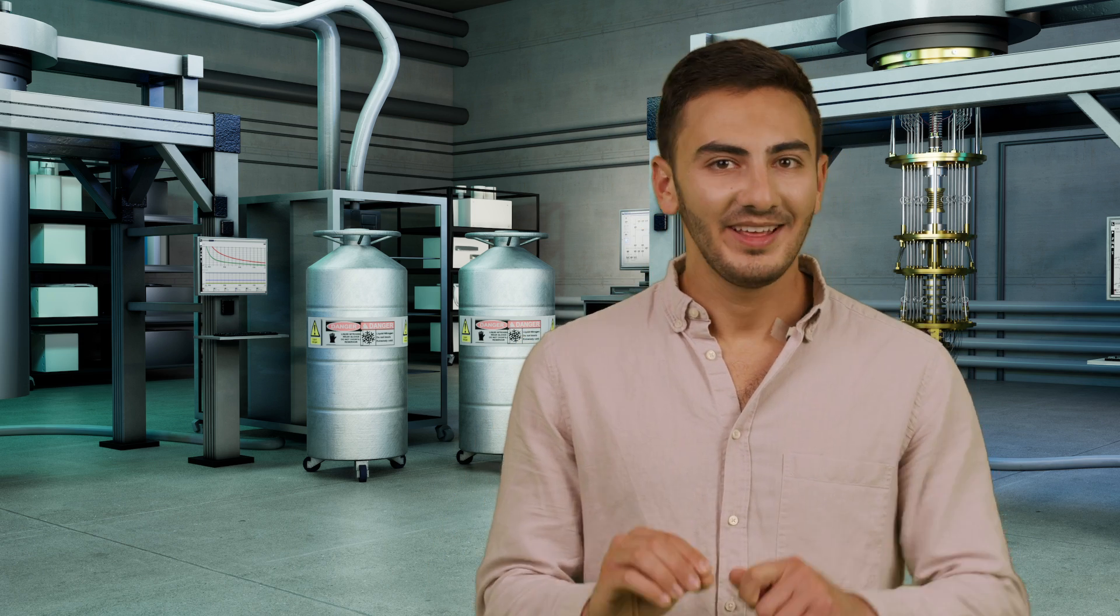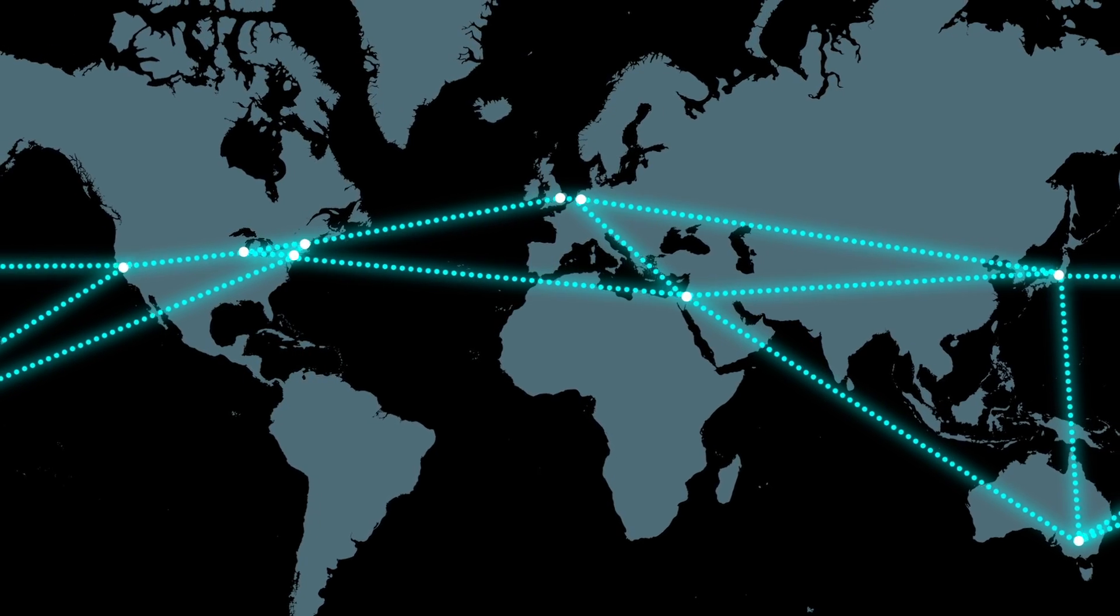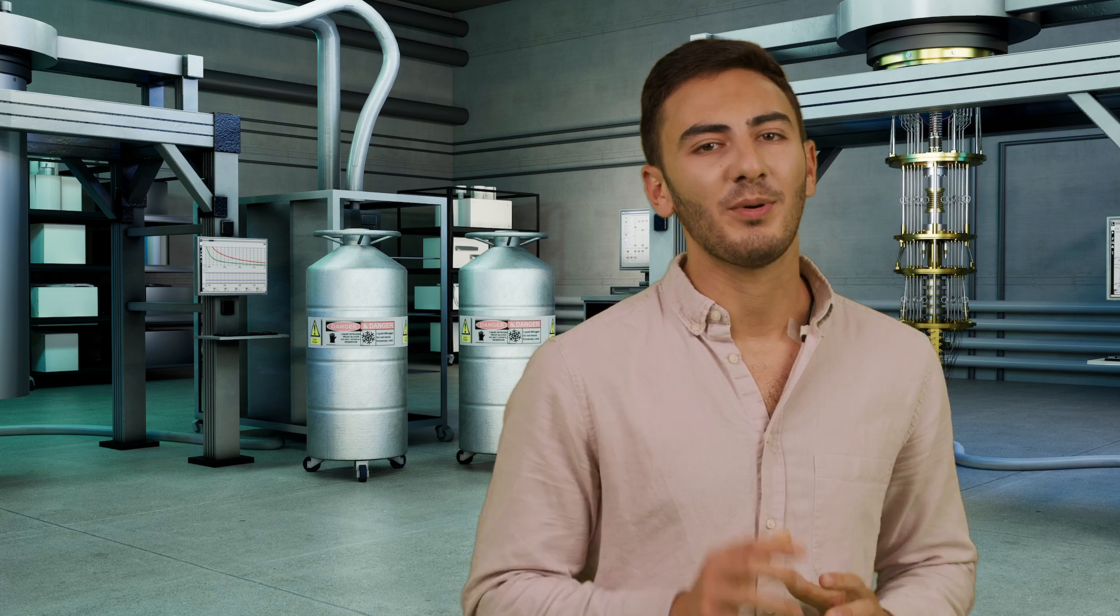Entanglement happens whenever quantum systems interact. And it's this entanglement, this interaction, that enables quantum technology to do such incredible things. Qubits are entangled together in different sequences to make quantum computers do calculations. Entanglement is also how we can securely communicate quantum information over long distances. And entanglement is how quantum sensors are sensitive enough to detect even single particles.